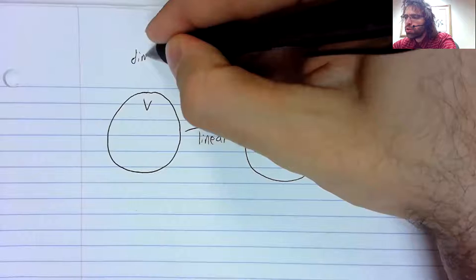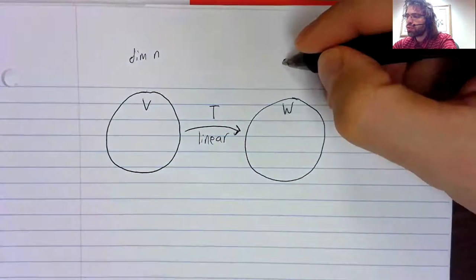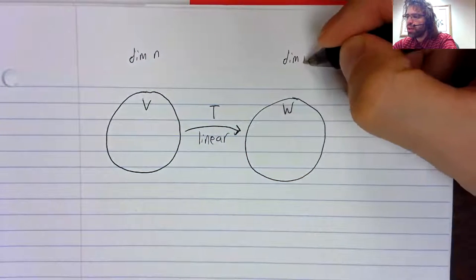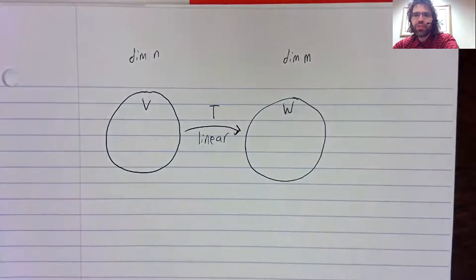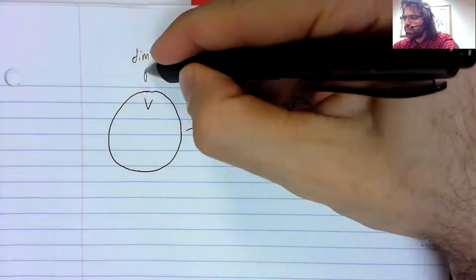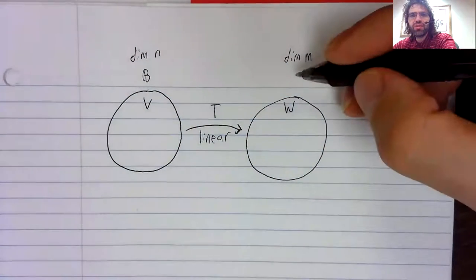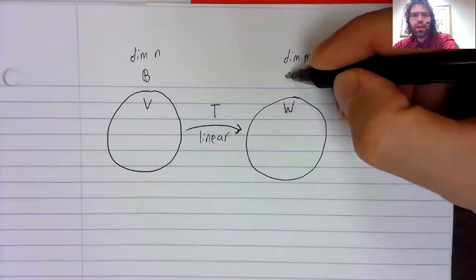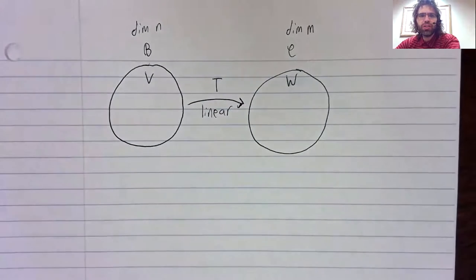And both these vector spaces are finite dimensional, and we have a basis of V and a basis of W.